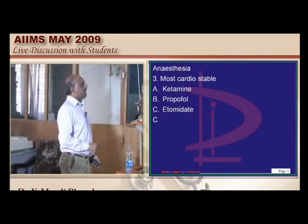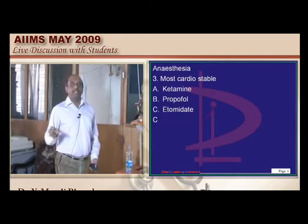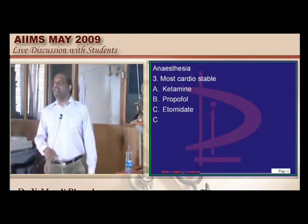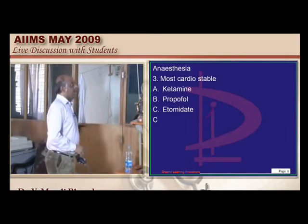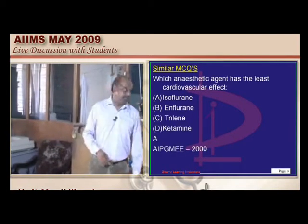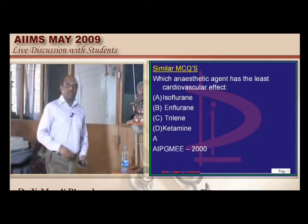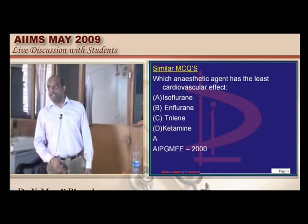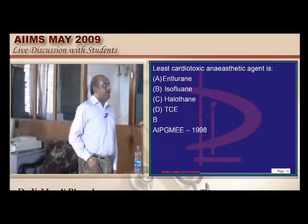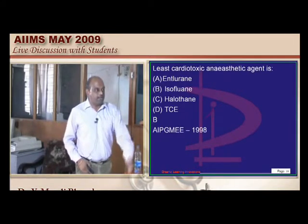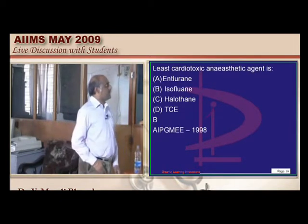What is the most cardiostable drug out of all these? We need to remember that etomidate is relatively more cardiostable among the anesthetics. A similar question is in AIPG 2000. Among the inhalational agents, isoflurane is the least cardiovascular unstable drug — rather the most cardiostable drug.